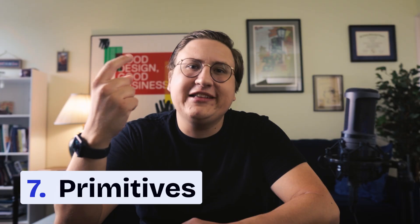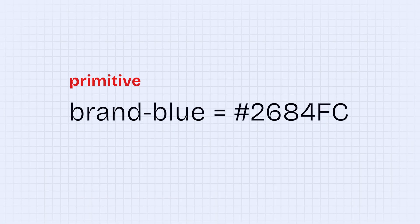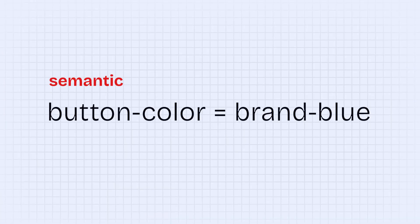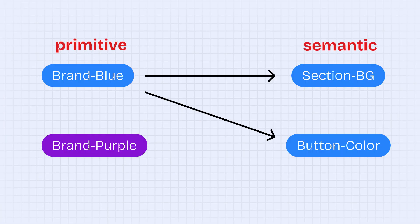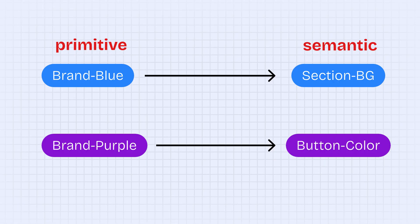To build a great design system, professional designers typically use two kinds of tokens: primitive tokens and semantic tokens. A primitive token is the most basic value in our design system — always a single raw value. For example, you might have a primitive token named Brand Blue with a certain hex color code. A semantic token, on the other hand, references a primitive token and is applied to an element in your design. For example, you might have a semantic token Button Color with the value of Brand Blue. We use primitive and semantic tokens so that we can change something like the color of our buttons without changing everything else that also uses our brand color, like a section background.